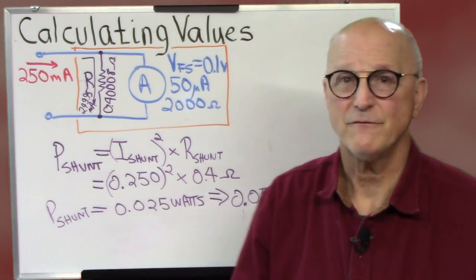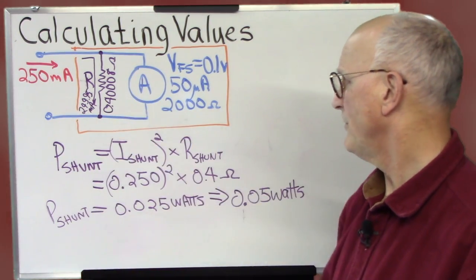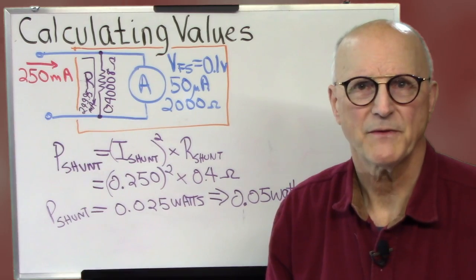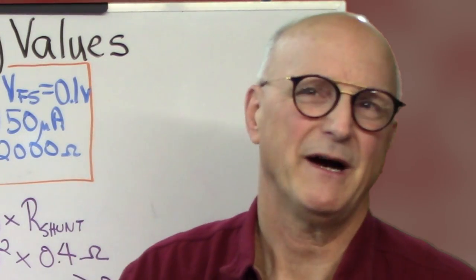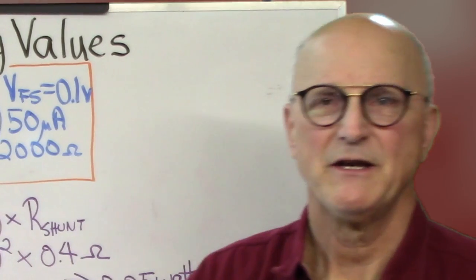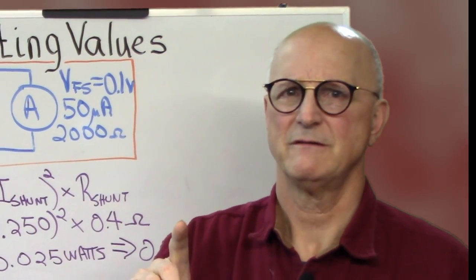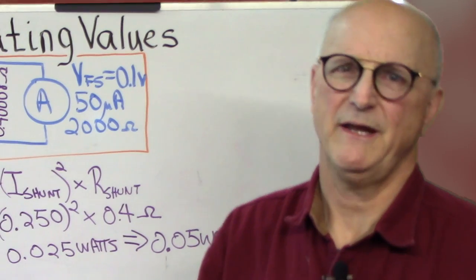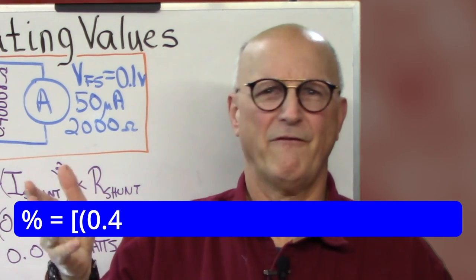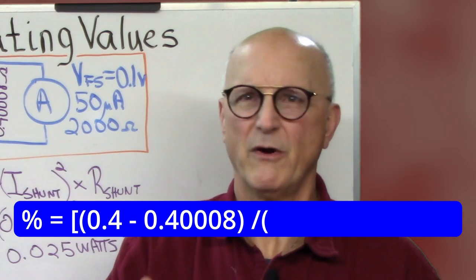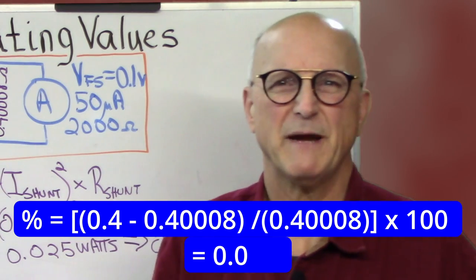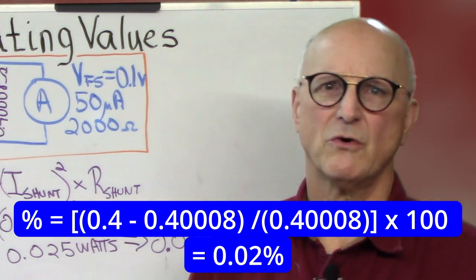Now we have to see if we can find a resistor with these specifications. 0.4 ohms, 50 milliwatts. What can we find out there at the various distributors? Well you know what? You can't buy a 0.4008 ohm resistor. Now you can buy a 0.4 ohm resistor. So how far off are we going to be if we go out and buy a 0.4 ohm resistor? Well let's do the math. 0.4 minus 0.4008 divided by 0.4008 times 100 gives us, well we're off by 0.02%. Totally insignificant.